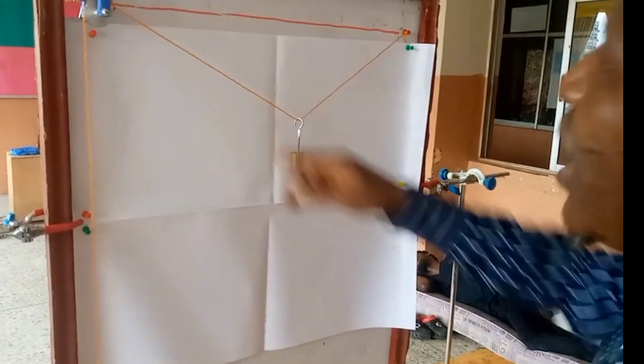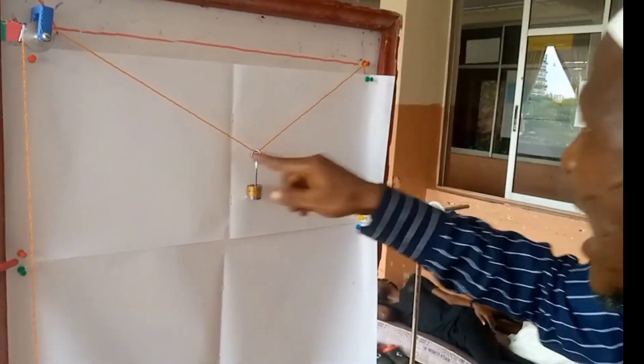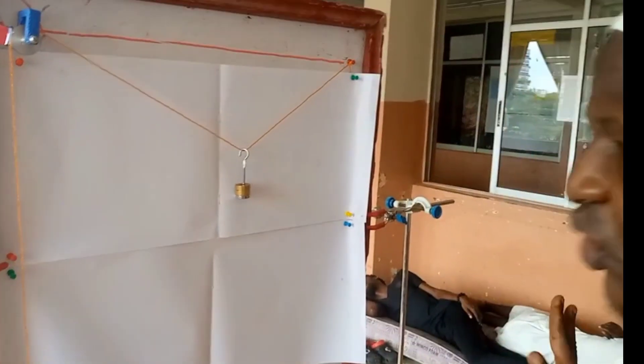Then you measure corresponding value of theta 1, theta 2 and alpha. Or X and Y. That's just it.